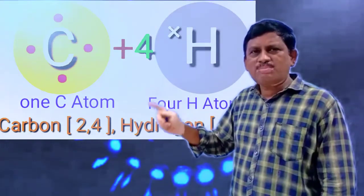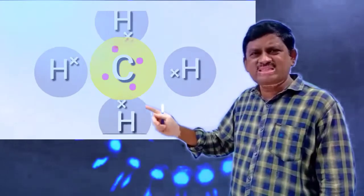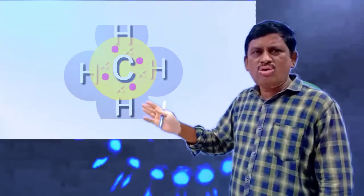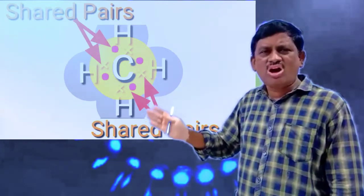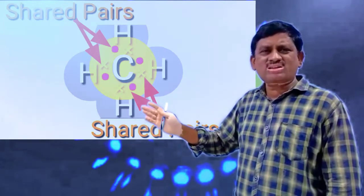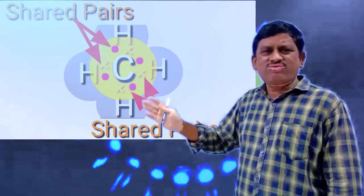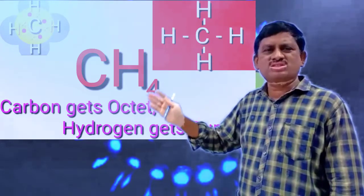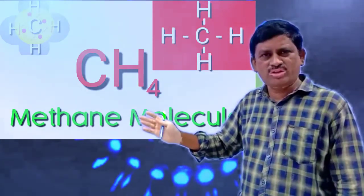Carbon needs four more electrons to achieve octet configuration. These four electrons are shared with one electron each from four hydrogen atoms. Finally, four bonded pairs form the CH4 molecule. That is, there are four covalent bonds in the CH4 molecule.